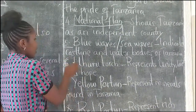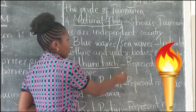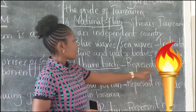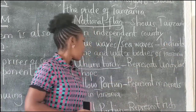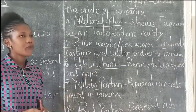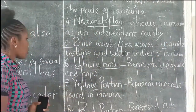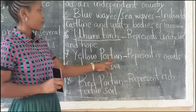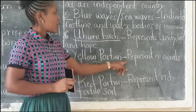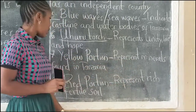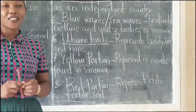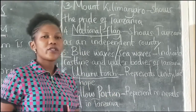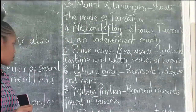Component number six is the Uhuru Torch, which represents unity, love, and hope. Component number seven is the Yellow Portion. The Yellow Portion represents minerals found in the country, like tanzanite, diamond, silver, and so forth.